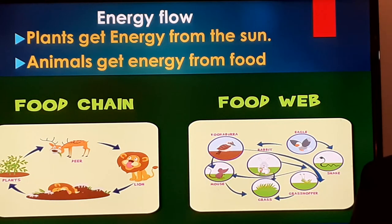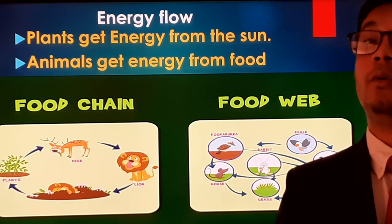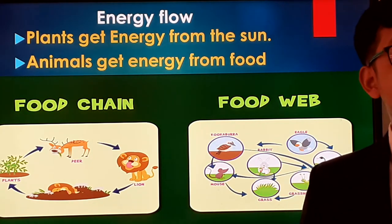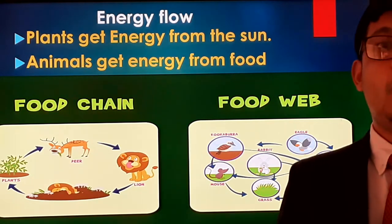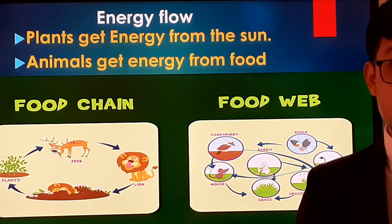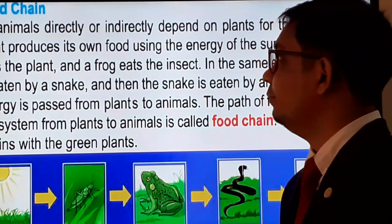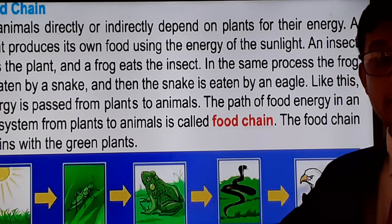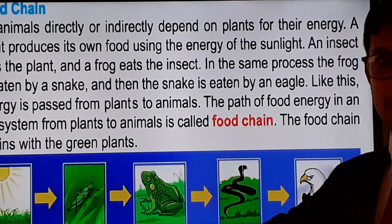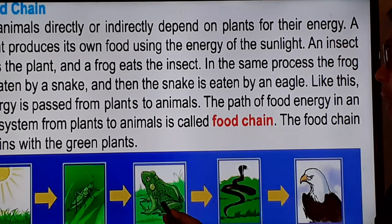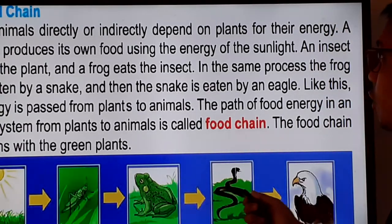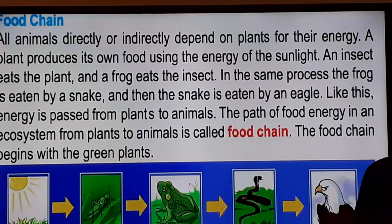Let's learn what a food chain is. In a particular ecosystem, there are millions of living things that exist in a chain. From grass to eagle, all are living things but they are connected in a chain called a food chain. For example: grass is the primary producer; grass is eaten by a grasshopper; the grasshopper is eaten by a frog; the frog is eaten by a snake; and the snake is eaten by an eagle.